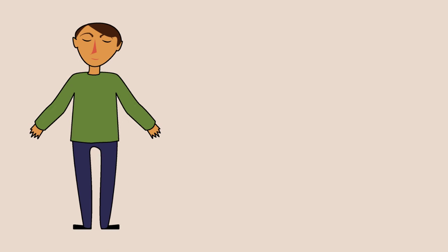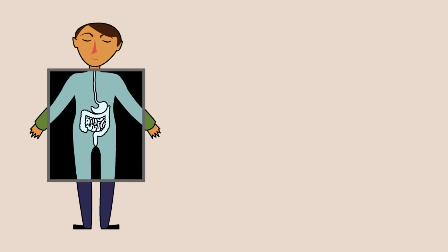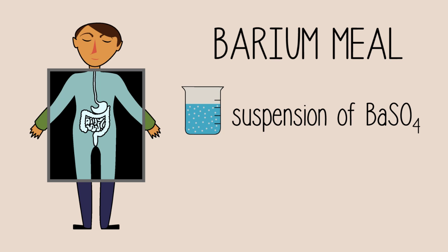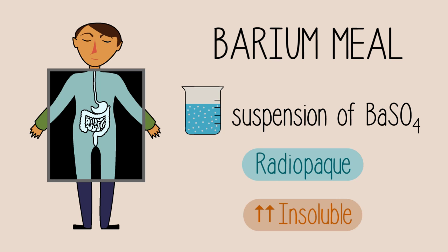So to recap, it is possible to obtain an x-ray image of your gastrointestinal tract by consuming a barium meal, which is a suspension of barium sulfate in water. It lines your gastrointestinal tract and prevents x-rays from passing through. Since barium sulfate is highly insoluble, it passes through your system safely.